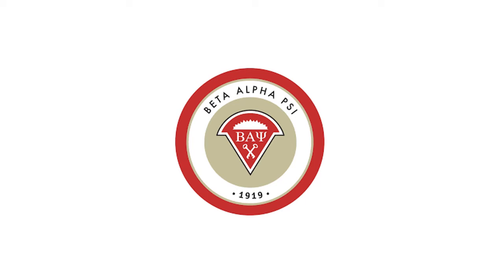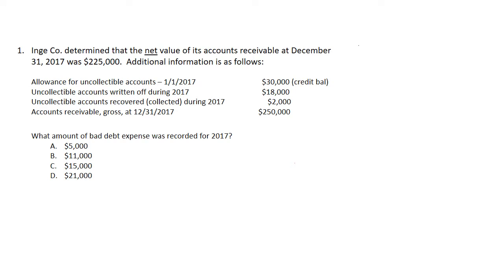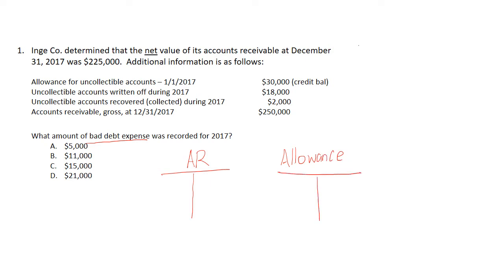Hi everyone, welcome to Beta of Sci Video. Today we're going to talk about Chapter 6, the first question is about bad debt expense. In this question we need to use two T-accounts: accounts receivable and allowance for doubtful accounts. First, we need to know the beginning balance of allowance.